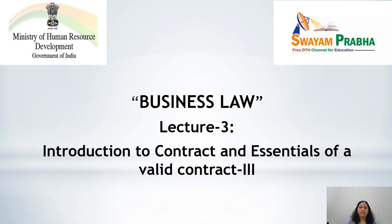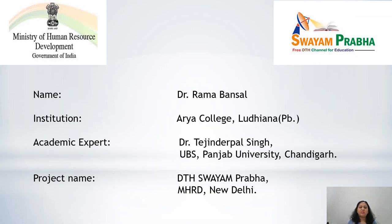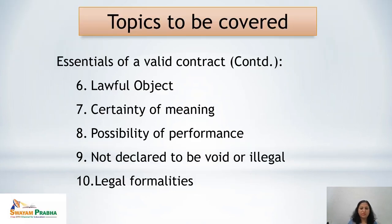Welcome to the third lecture of the subject Business Law. The topic for today is Introduction to Contract and Essentials of a Valid Contract, Part 3. I am Dr. Rama Bansal, working as assistant professor at Aarya College, Ludhiana. This project is sponsored by DTH Swayamprabha, MHRD, New Delhi. In this lecture we are going to cover the remaining essentials of a valid contract. We have discussed five essentials in previous lectures; now we will cover the rest five: lawful object, certainty of meaning, possibility of performance, not declared void or illegal, and legal formalities.